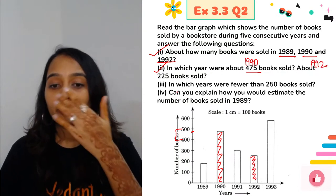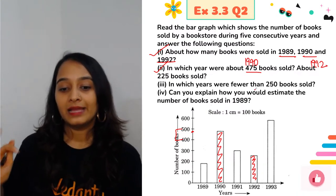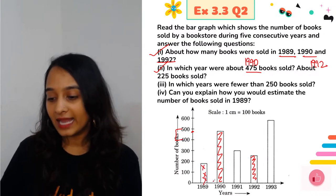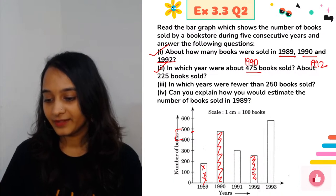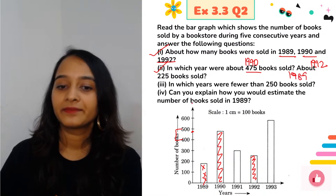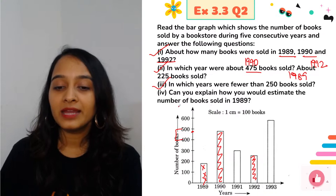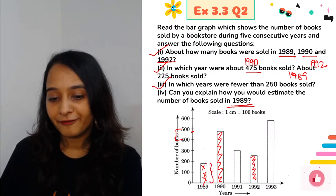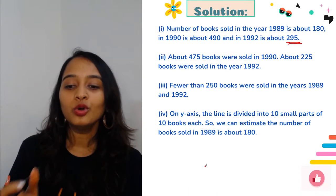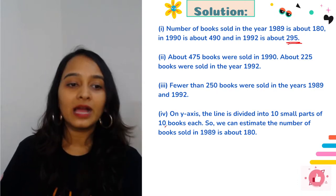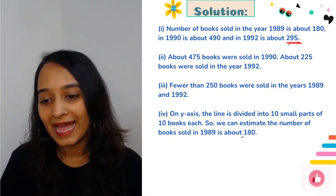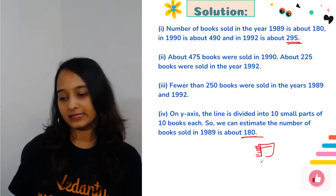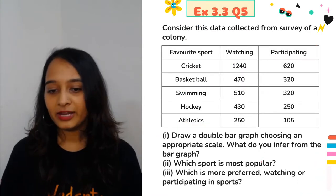About 225 books were sold - that limit lies between 200 and 300, so that is 1992. See the height of that bar graph lies somewhere between 200 and 300. In which years were fewer than 250 books sold? As you can see: 1989. How would you estimate the number of books sold in 1989? Check out the height of the bar graph - it lies between 100 and 200. The small divisions are divided into 10 equal parts, so draw a horizontal line and get the exact value.